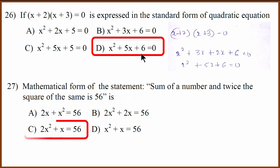27th question is that sum of a number, x is a number, and twice the square of the same, so that is 2x square equals 56. So x plus 2x square equals 56.